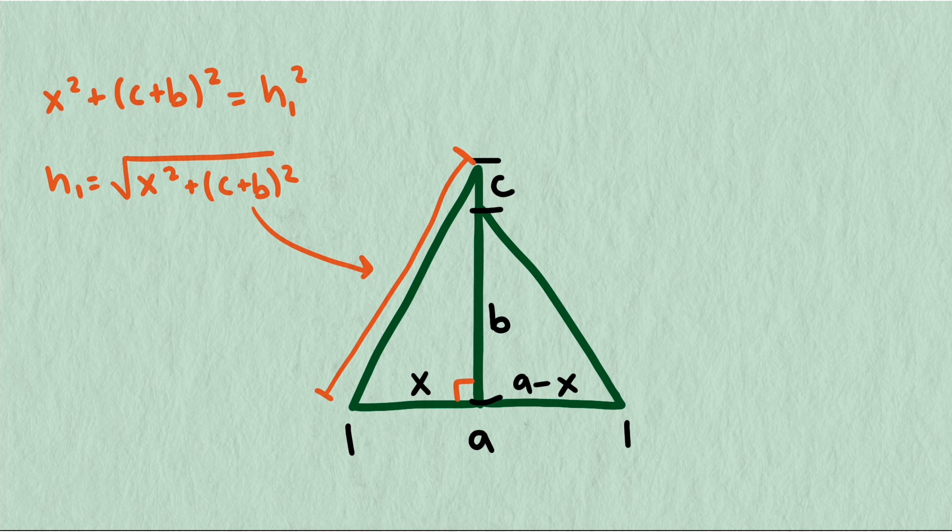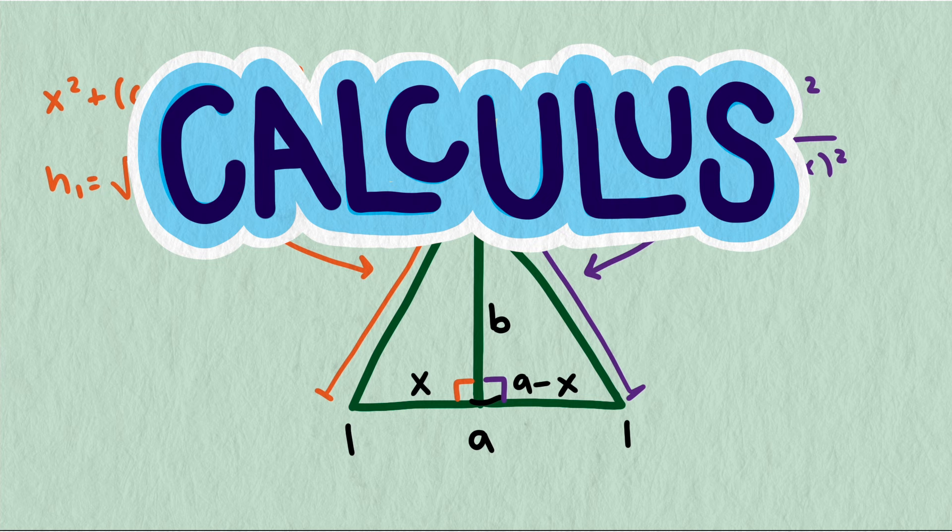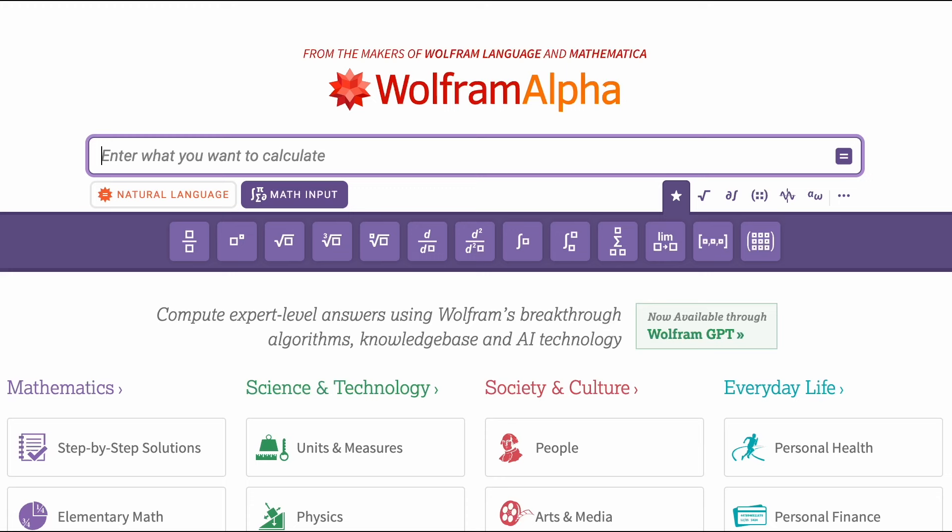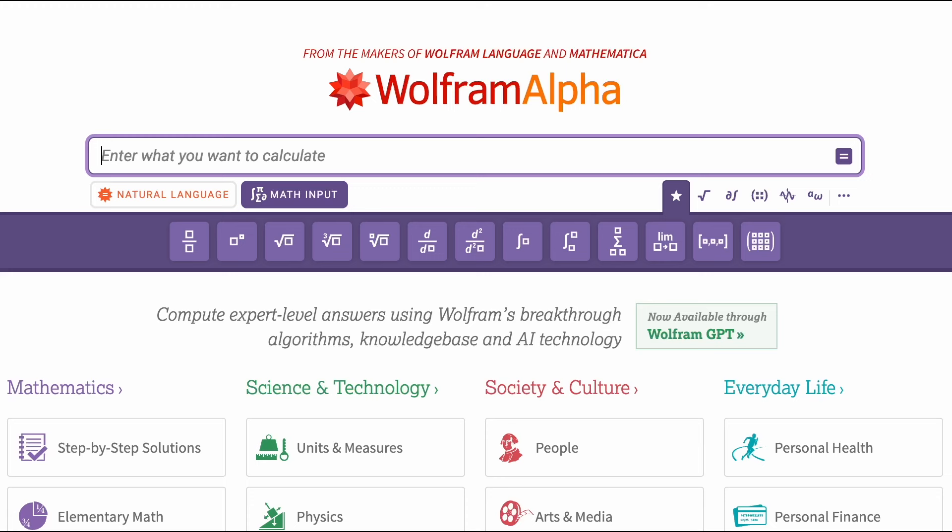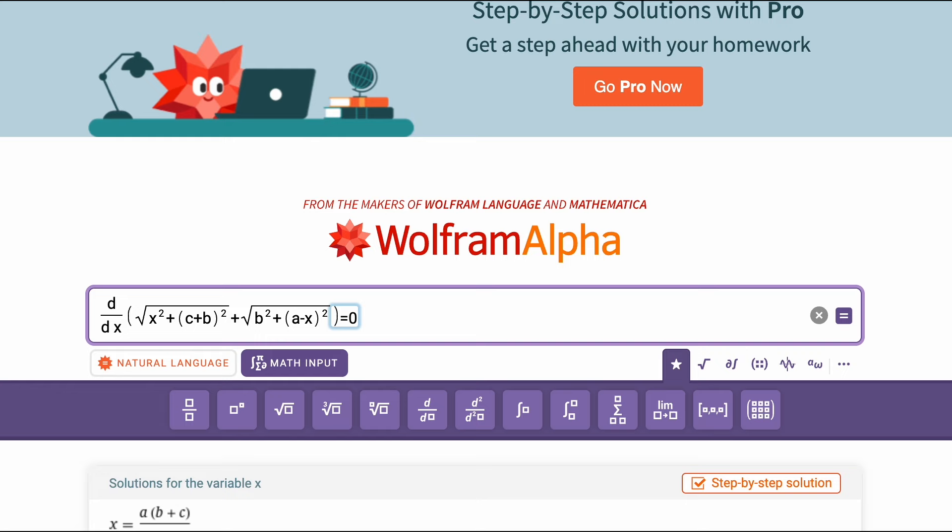Unfortunately, we can't graph this to find a minimum like we did earlier. This is really where the power of calculus comes in. We can still find the minimum by taking the derivative, setting it equal to zero, and solving. We will let Wolfram Alpha do the computation for us, and for how crazy the expression looks, the optimal value for x is pretty simple. Wolfram gives us two solutions.